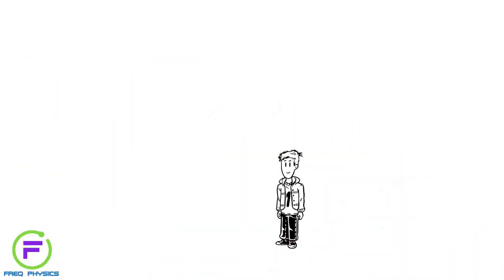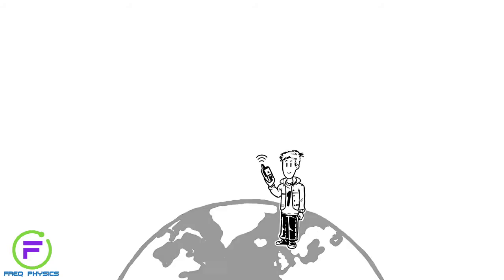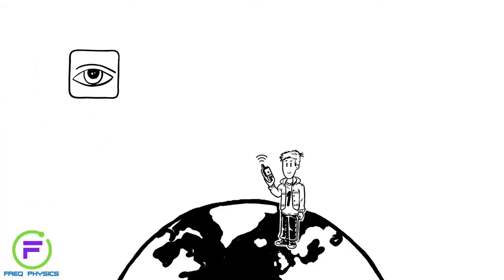Let's say you want to find your current position using GPS. At all times, you are in the line of sight of at least four satellites.